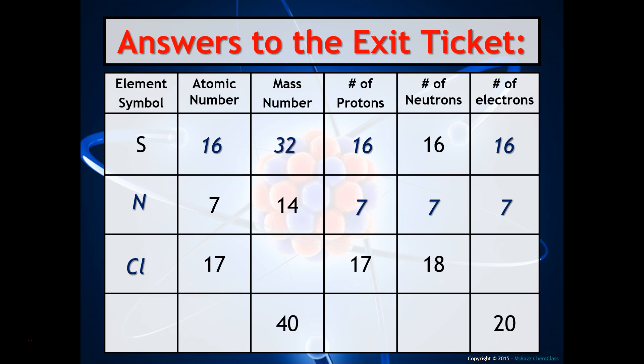When you look up atomic number 17, you'll find that is the symbol for chlorine. The mass number is the number of protons and neutrons combined — 35. The number of electrons equals the number of protons, which is 17.